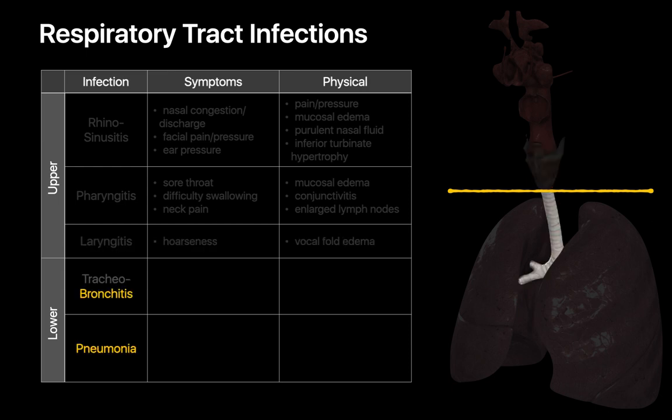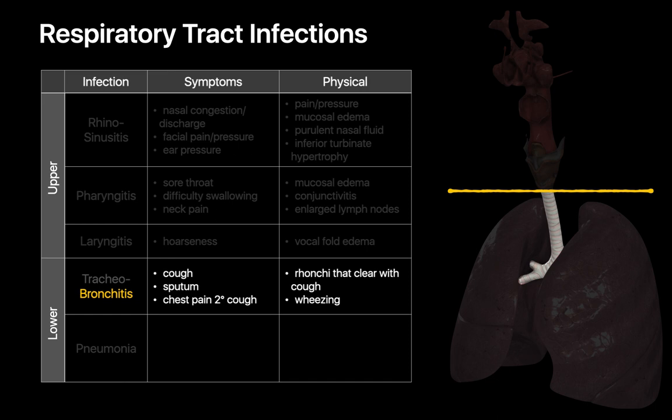Lower respiratory tract infections consist of bronchitis and pneumonia. Typical symptoms of bronchitis include cough, excessive sputum production, and chest pain caused by all the coughing. Physical exam findings will include ronchi on auscultation that clear with coughing, in addition to wheezing.